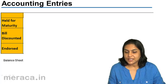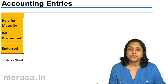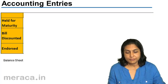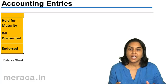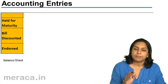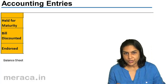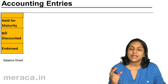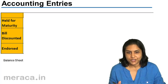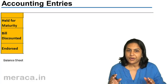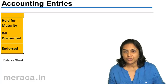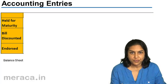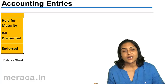Let us now discuss certain accounting entries in the different situations which arise while dealing with bills of exchange — bills or promissory notes. Whenever we talk of a bills receivable, it could be a bill of exchange or a promissory note. Bills receivable represents the document against which money is to be received. Bills payable similarly represents either the bill of exchange or the promissory note against which payment has to be made. What is bill receivable in the books of X, the same document would be a bill payable in the books of Y.